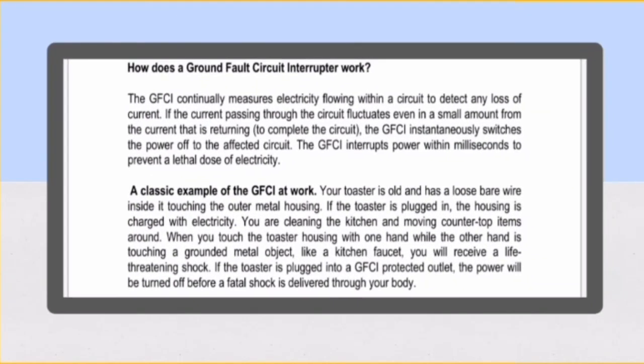How does a ground fault circuit interrupter work? A GFCI continually measures electricity flowing within a circuit to detect any loss of current. If the current passing through the circuit fluctuates even a small amount from the current that is returning, the GFCI instantaneously switches the power off to the affected circuit. The GFCI interrupts power within milliseconds to prevent a lethal dose of electricity.